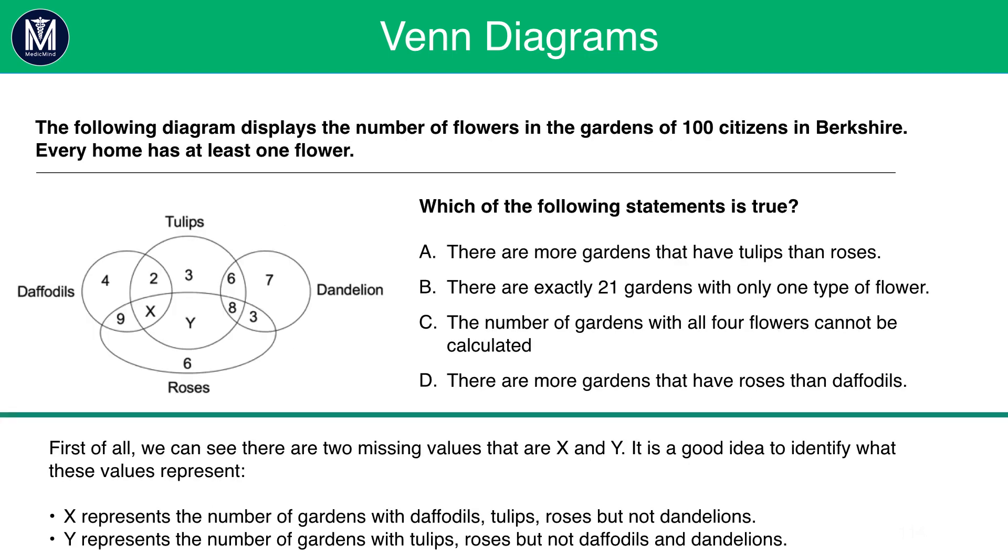First of all, we can see that there are two missing values that are X and Y. It's a good idea to note down what these values represent. We can see that X represents the number of gardens with daffodils, tulips, roses but not dandelions. We see that Y represents the number of gardens with tulips, roses but not daffodils and not dandelions.